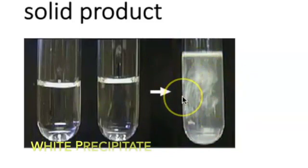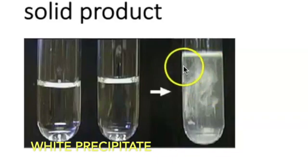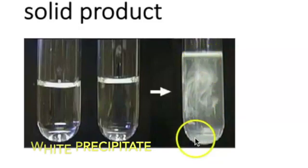Solid doesn't mean it's a big piece of solid. It just means it's enough of a solid so you can see it, and it typically manifests as a color change. This will eventually fall to the bottom, so it's called a precipitate.